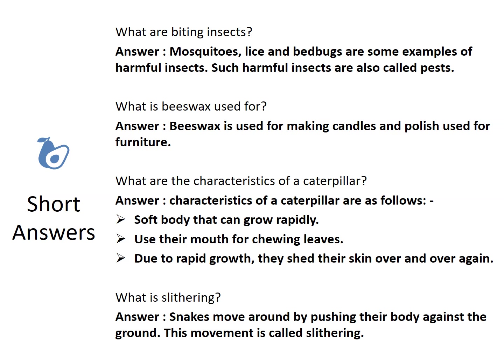What are the characteristics of a caterpillar? A caterpillar has a soft body that can grow rapidly, uses its mouth for chewing leaves, and sheds its skin over and over again. What is slithering? Snakes move by pushing their body against the ground — this movement is called slithering.